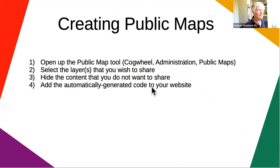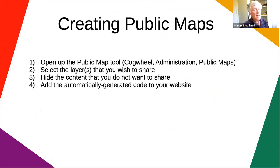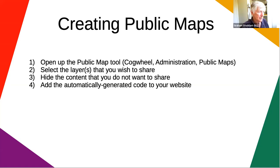How do you go about creating a public map? It's not immediately obvious because you have to go to the cogwheel, click on administration, and then select public maps. Then it's simply a matter of selecting the layers you wish to be involved in the public map, hiding content you don't want to share, and then adding the automatically generated code to your website. It really is as simple as that.